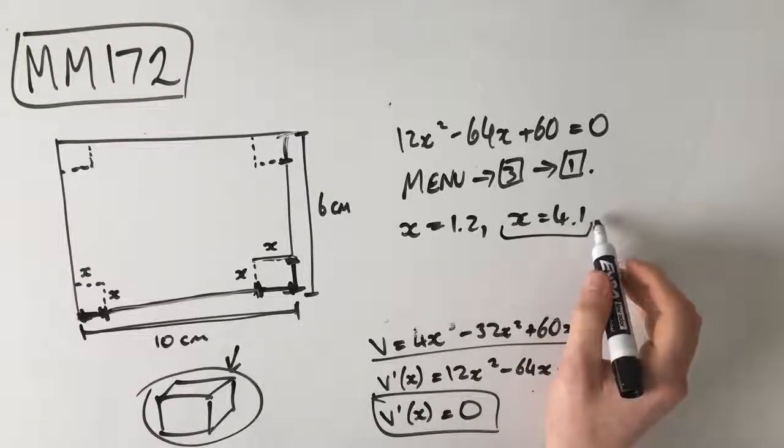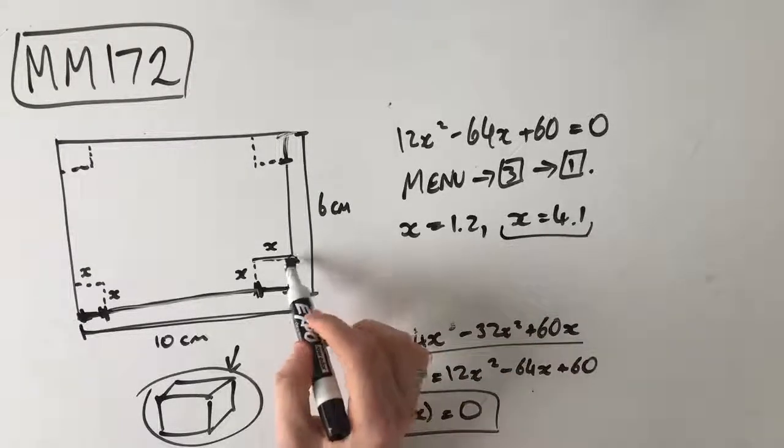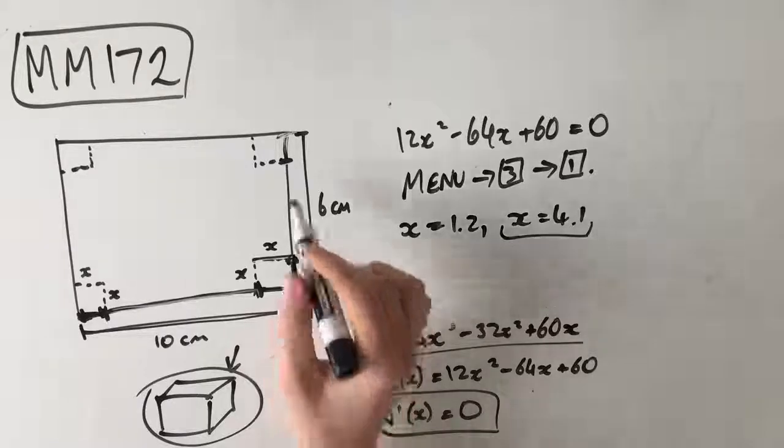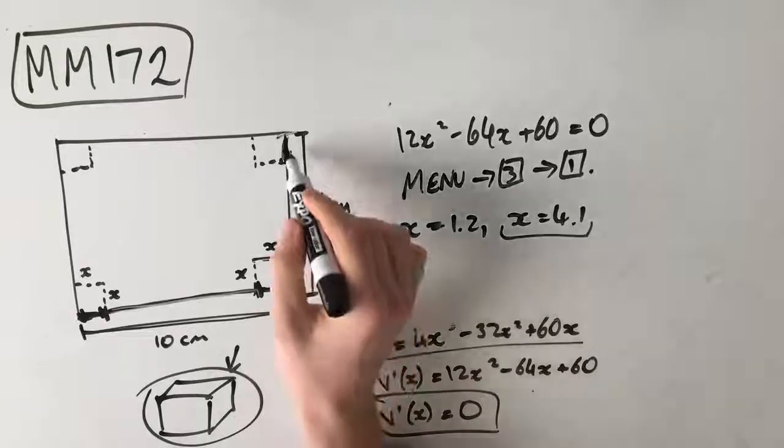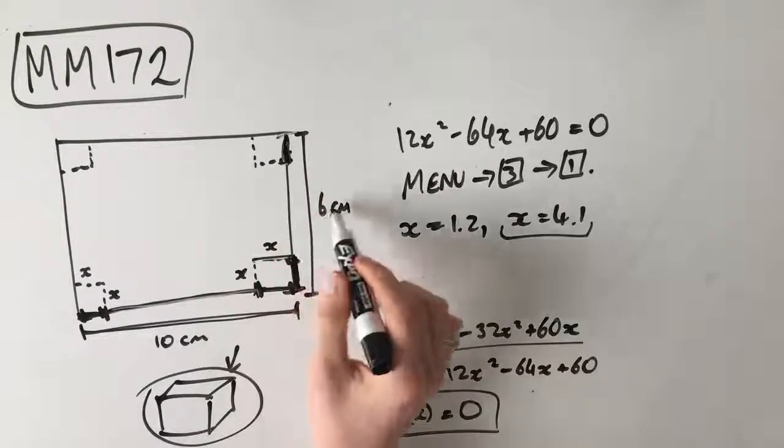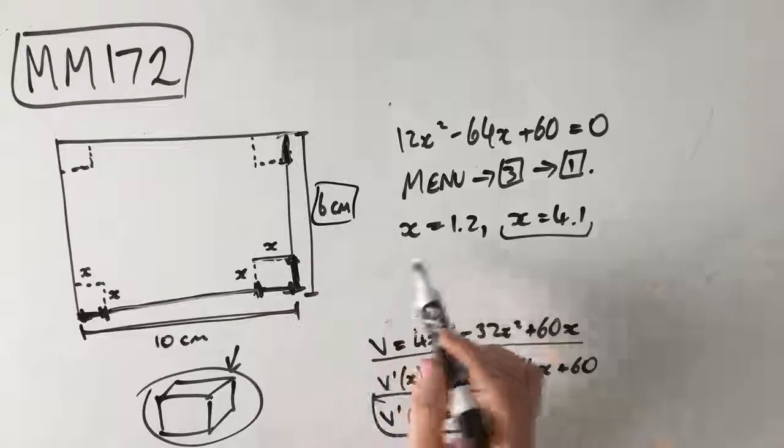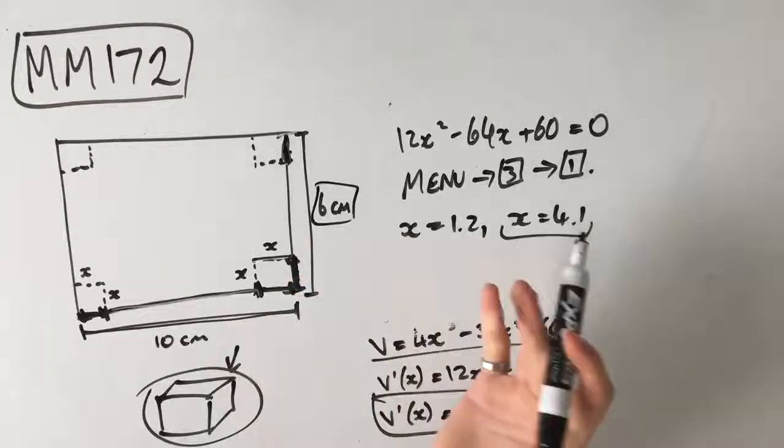If x equals 4.1, that means that we're actually cutting out 4.1 here, and 4.1 here, which means we've actually cut out 8.2 centimeters from this side, which is actually not possible, because this is only 6 centimeters. So x can't equal 4.1, because then we'd have no box left.